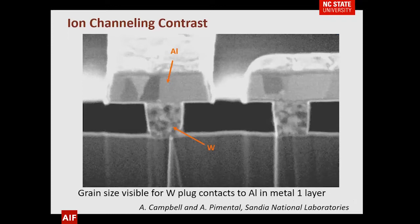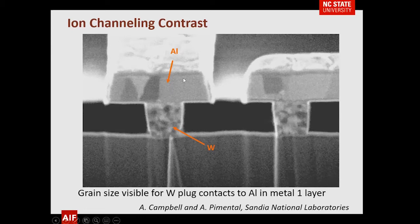From a semiconductor standpoint, here's a structure with tungsten plugs and an aluminum line attached to it. With the FIB secondary electron image, you can see immediately that the tungsten grains are smaller. When you look at the aluminum grains, you can see they are larger and in general cover the entire thickness of that particular layer.